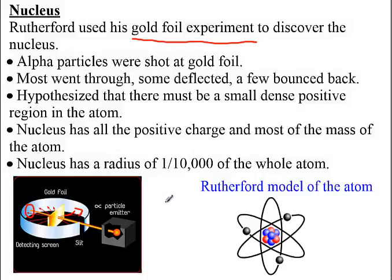From that, we had the idea that we have a nucleus. We also deduced that there were protons, but they didn't discover the neutrons in the nucleus until quite a few years later. So after Rutherford, we had this model — I like to call it the Jimmy Neutron model — where you have a positive nucleus in the center surrounded by electrons.